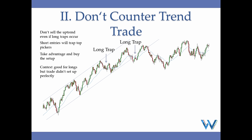Most reversal attempts in trends will fail — these rallies to the upside are just reversal attempts and most of them will fail. When you're not sure if the trend has ended, you follow the overall bias. Even if you're struggling to find a proper trend line, you stick with the overall bias and do not counter-trend trade. Don't sell the uptrend even if long traps occur. Remember the trend line rule — it applies even to short-term trends. You cannot sell the long trap even if you're confident that buyers are trapped, because the trend is still in play.